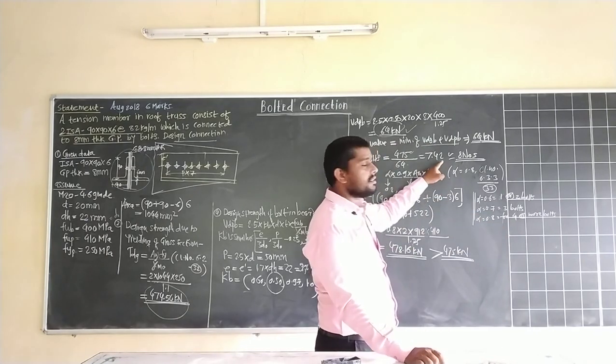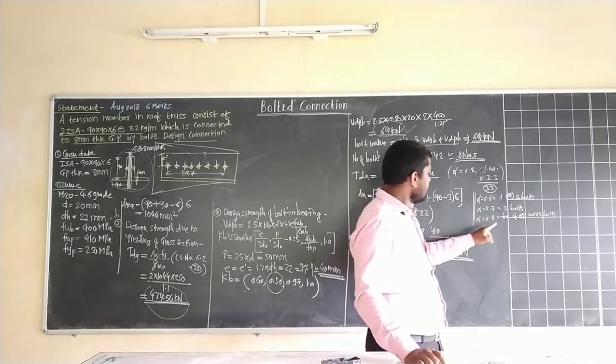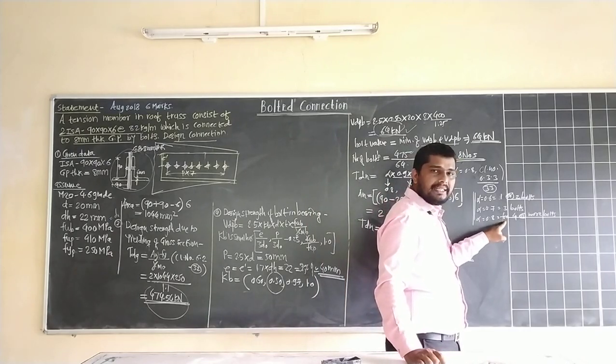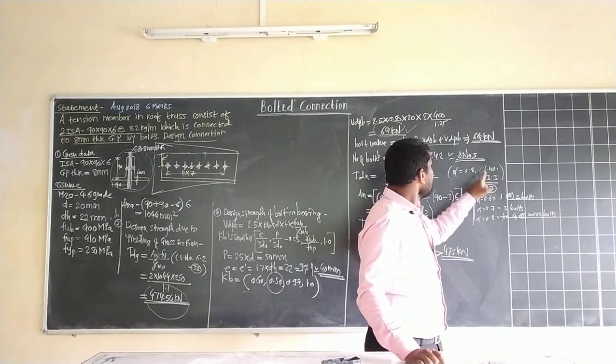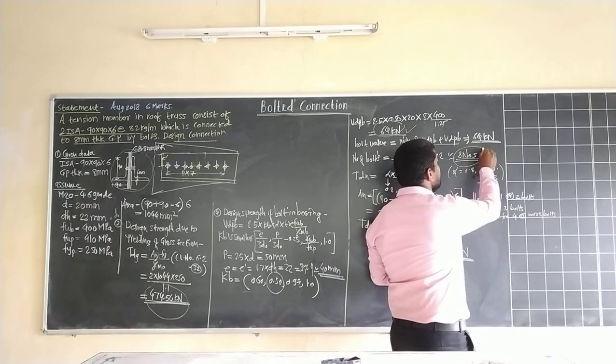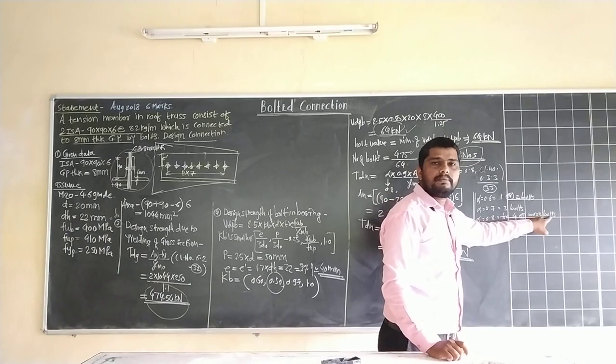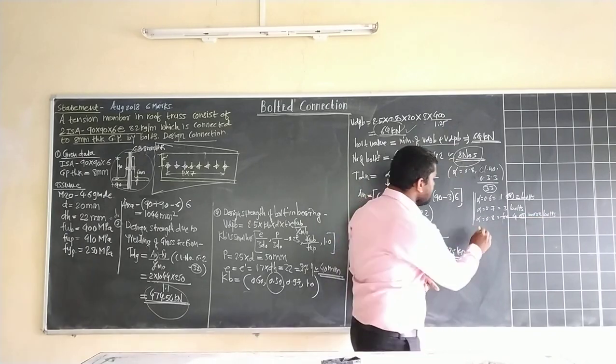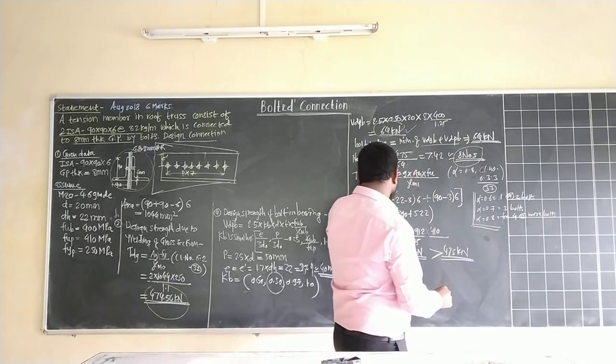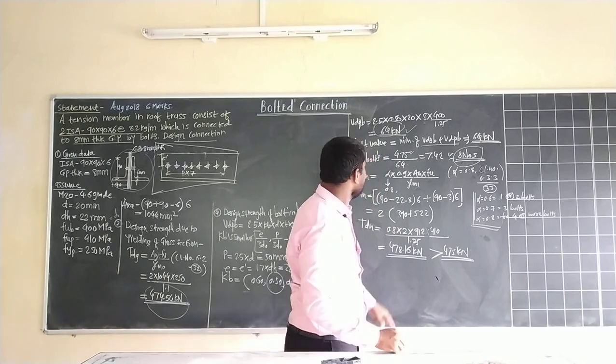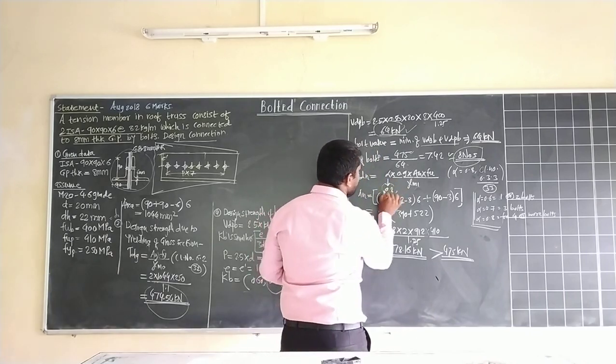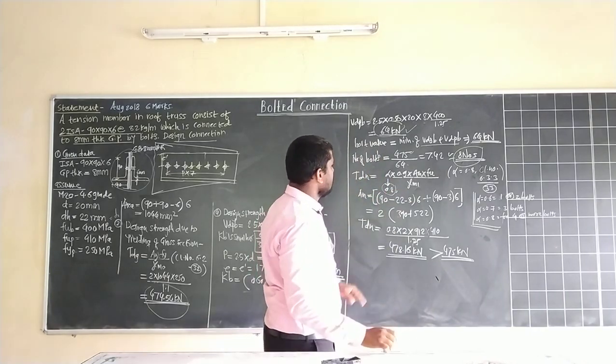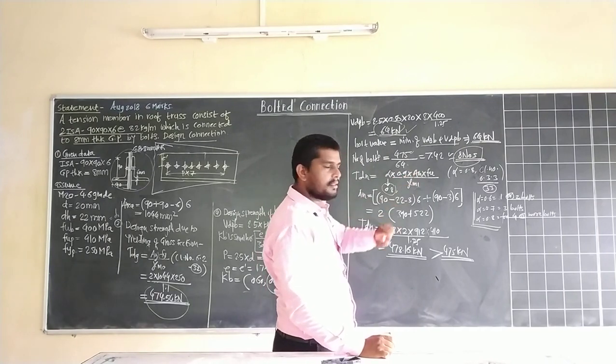Our answer is 8 number of bolts, which lies in the third criteria for alpha value. For 4 or more bolts, we use alpha as 0.8. So we have taken alpha value 0.8. Therefore 0.8 into 0.9.